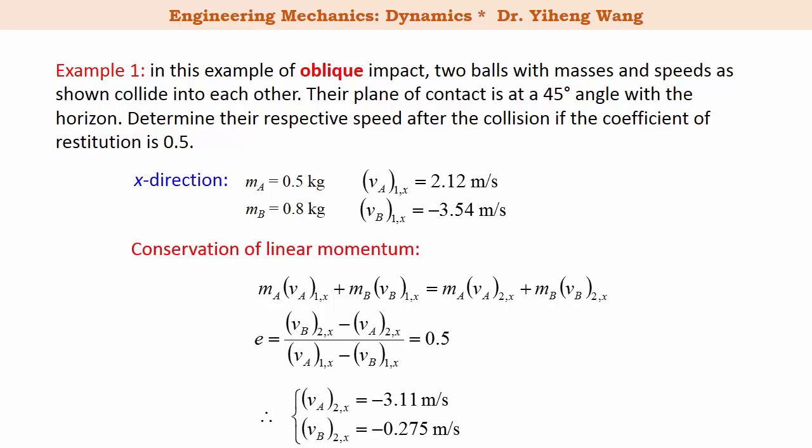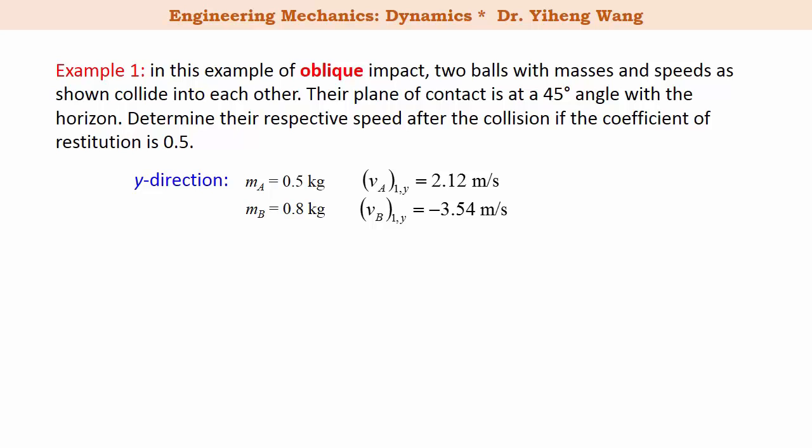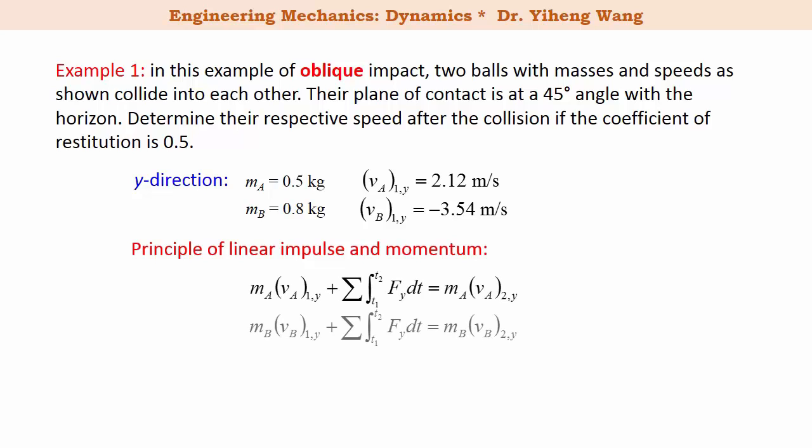Don't forget the y direction is perpendicular to the line of impact. For the y direction we can apply the principle of linear impulse and momentum to each individual particle, for particle A and for particle B. However, along the y direction there is no force, therefore there is no linear impulse for either particle. Therefore, for each particle their final velocity along the y direction is simply the same as their initial velocity along the y direction.